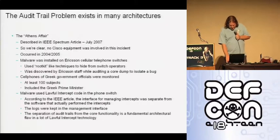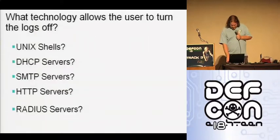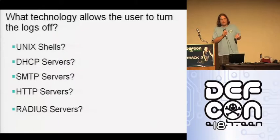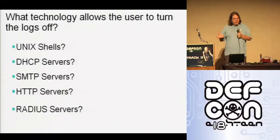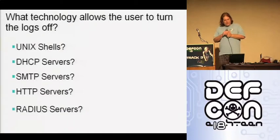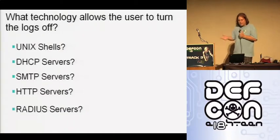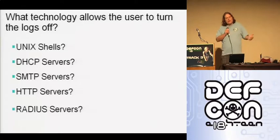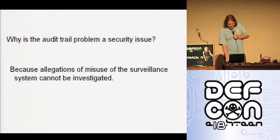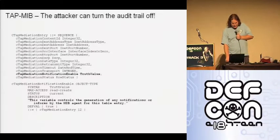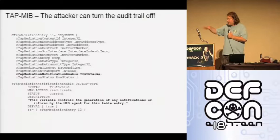Another issue: once you've started your wiretap, you'd expect an audit trail. But that doesn't result in an audit trail either. Inside the MIB for the interception request, you can actually turn notification off — you can say 'don't tell anyone about this wiretap, keep it a secret.' This is really bizarre. What kind of technology allows the user to turn the logs off? Unix shells get syslogged unless you're root. DHCP, SMTP, and HTTP servers all constantly generate audit trails. This is the only technology I've ever seen where the user can just turn logging off.